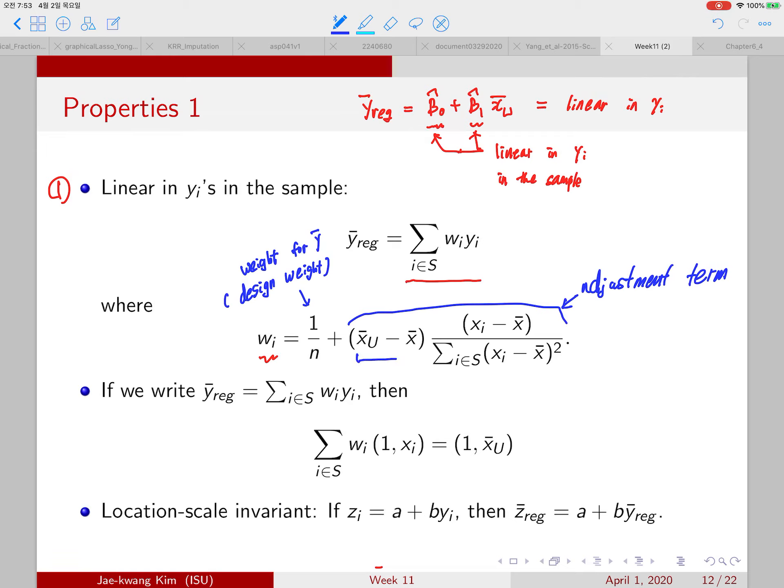And notice that the adjustment term has a factor of the difference between the sample mean and population mean. So if this term is small, that means that we have a good sample. If this term is close to 0, then the adjustment term will go away, and then the weight will be just equal to 1 over n. But if this is larger, then we adjust a lot. If it is small, then we adjust a little.